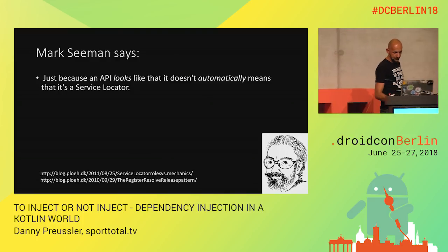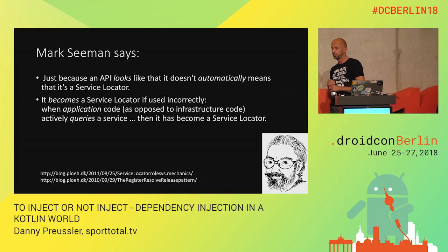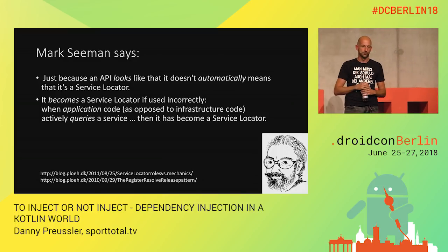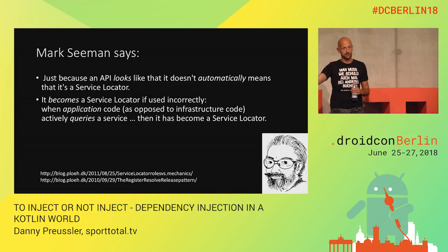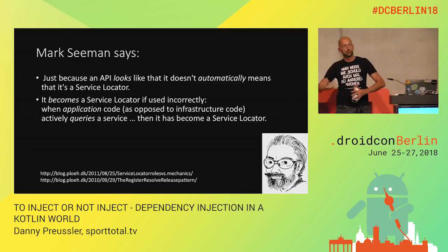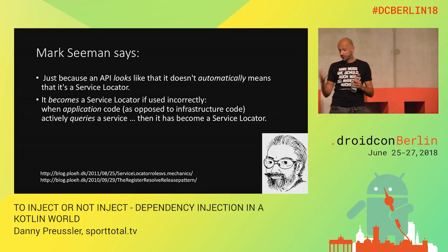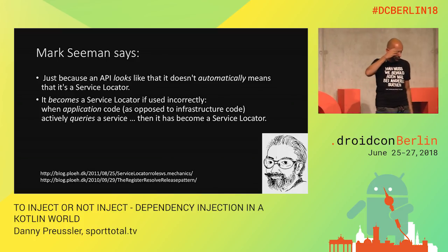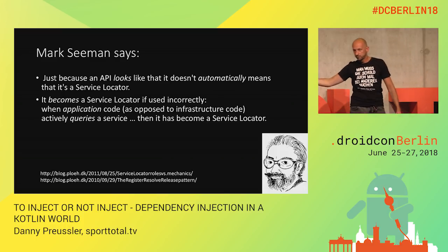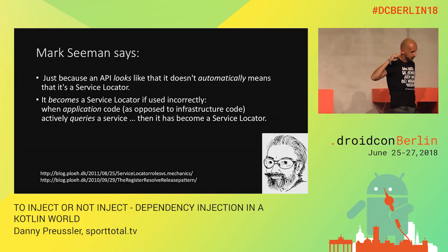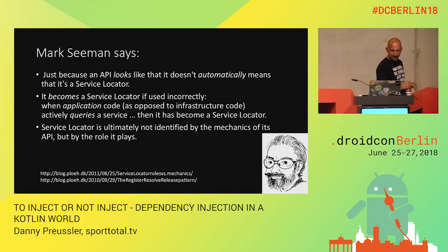Basically what Seeman is saying is it becomes a service locator if you use it incorrectly. When application code — as opposed to infrastructure code — is querying the service, then it is a service locator. That thing under the hood that Martin calls a service locator, Seeman calls a composition root. There are developers who use Dagger in the service locator way — they would not use the @Inject part, they would directly ask Dagger for something. By Seeman's definition, that's a service locator.